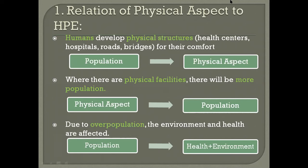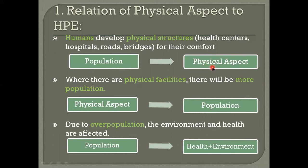The first point: humans develop physical structures. Inside physical structures there are health centers, hospitals, roads, and bridges. These physical structures are developed by human beings for their comfort. So there is an interrelationship between population and physical aspect — human beings develop physical structures for their comfort.